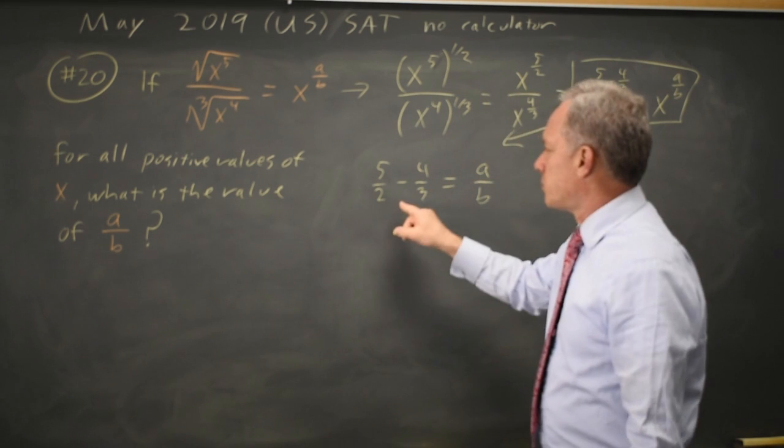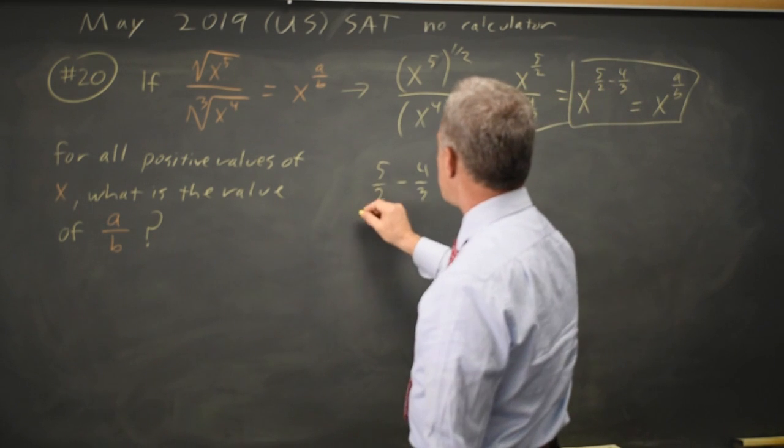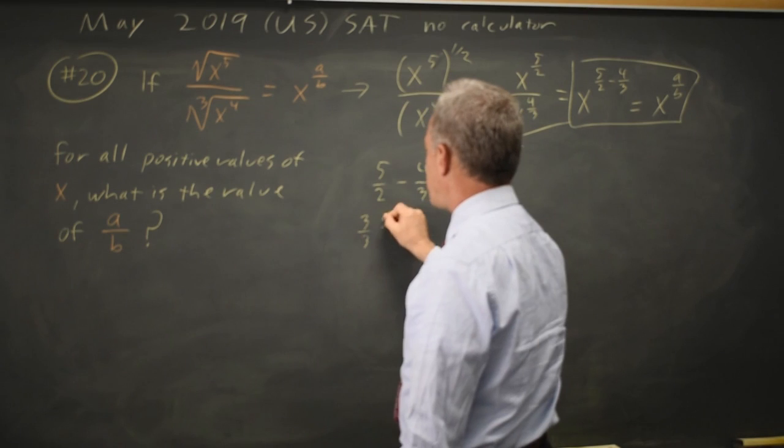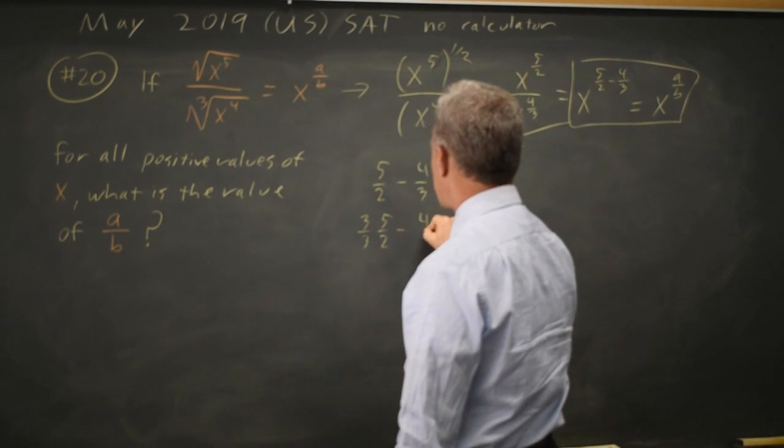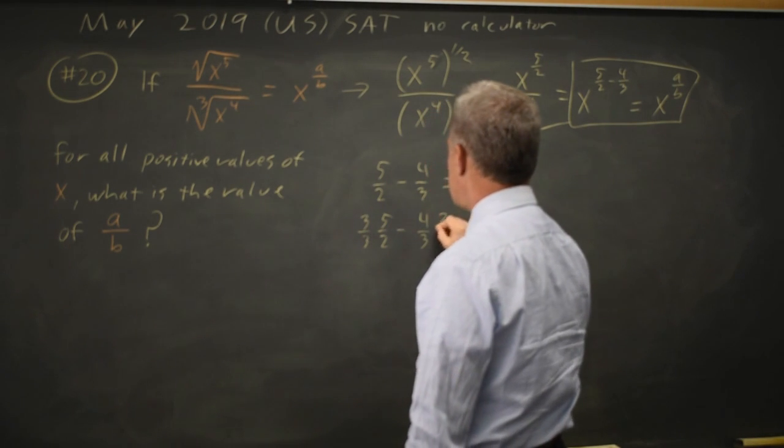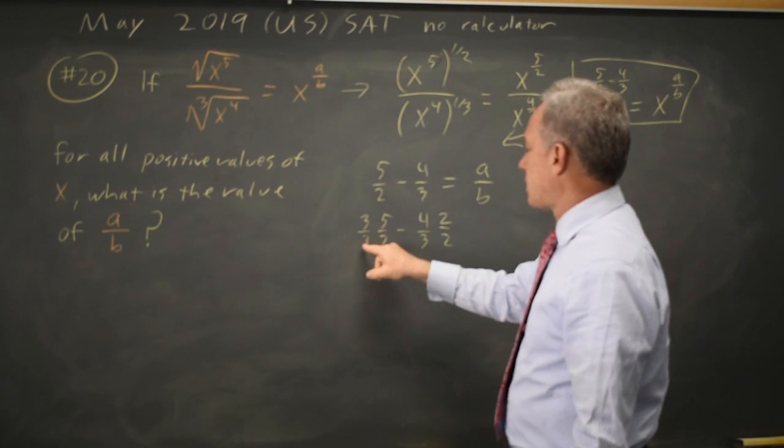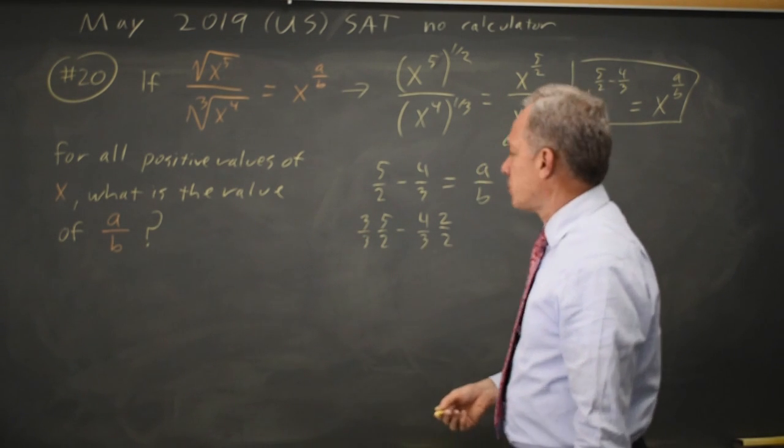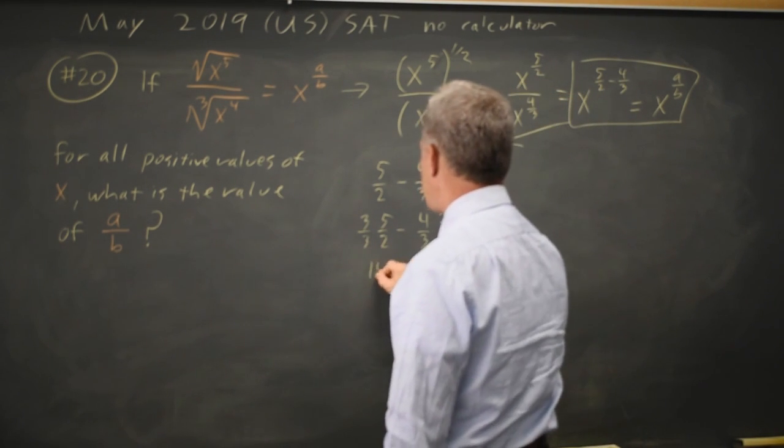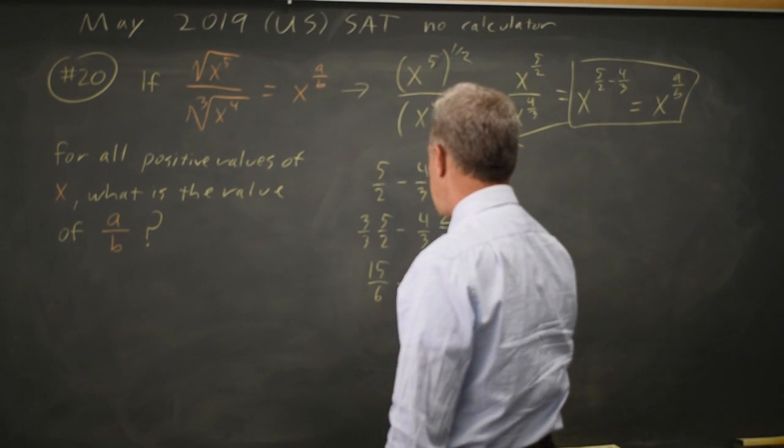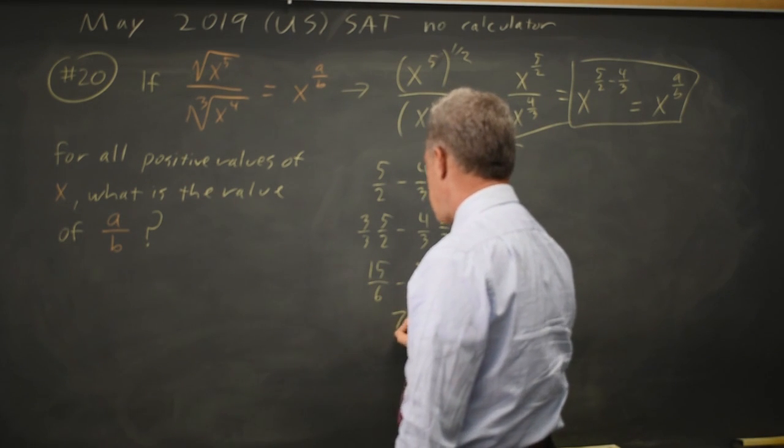So I want to find a common denominator here. If I multiply it by 3 thirds, 3 thirds of 5 halves minus 4 thirds, I'm going to multiply this by 2 halves because that gives them both denominators of 6 for a common denominator. I have 15 over 6 minus 8 over 6, which is 7 over 6.